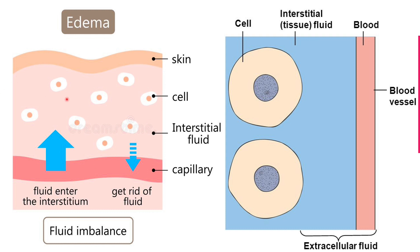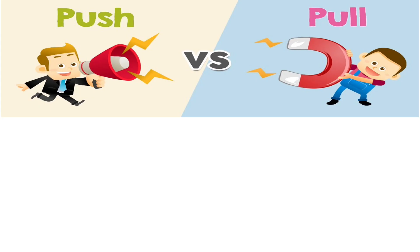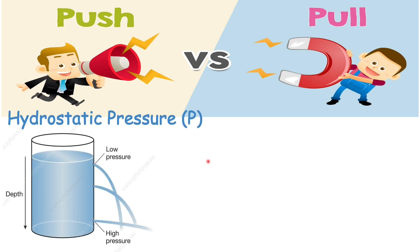We need to understand what forces keep fluid inside blood vessels, because if those forces are imbalanced, we get edema. I like to use this analogy of the Starling forces as push and pull. There is a force that pushes fluid outside, which is hydrostatic pressure — the greater the depth of water, the higher the pressure.